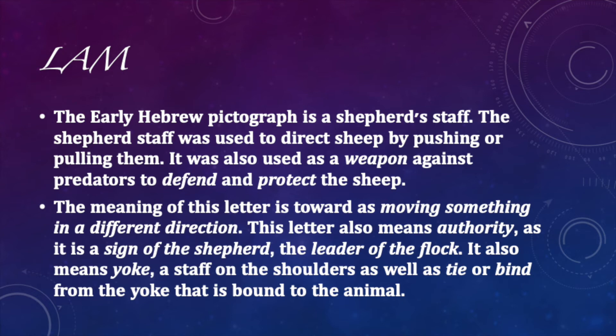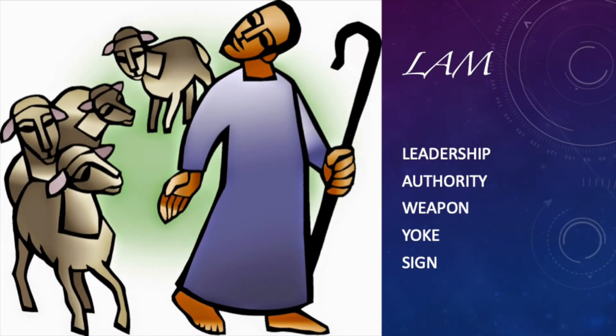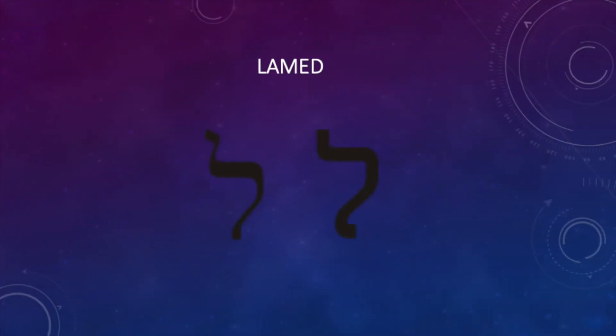The Lamed also has the idea of moving forward, authority, and being the leader of the flock. It also carries the meaning of a yoke placed on the shoulder to bind an animal. The Most High uses these signs to show us the purpose of his direction — to lead us, to demonstrate his authority over us, to use his Torah as a weapon against those who come against us, and to bind and yoke us to him.